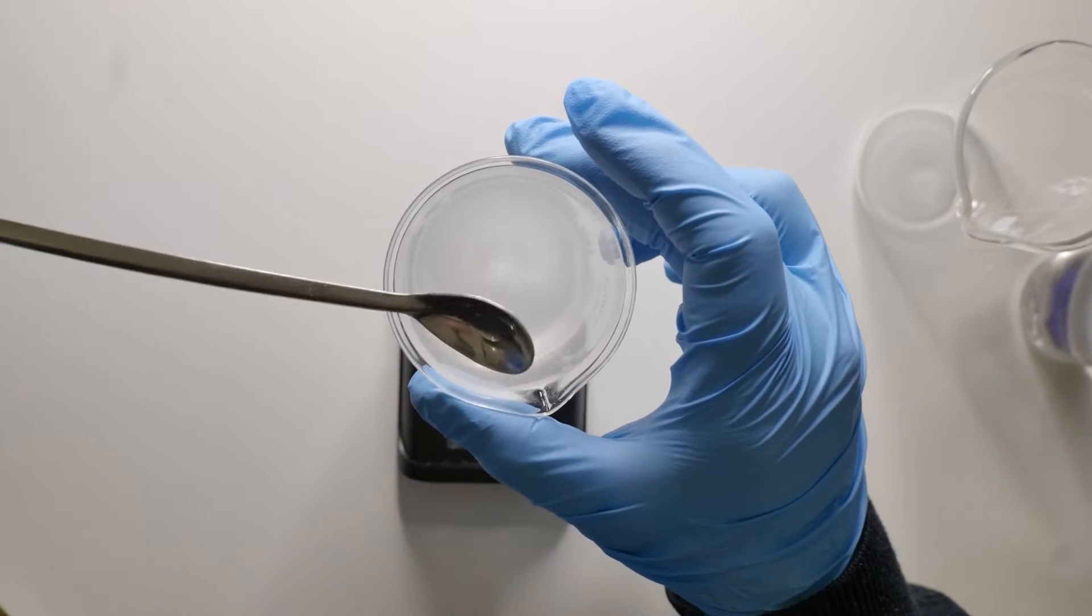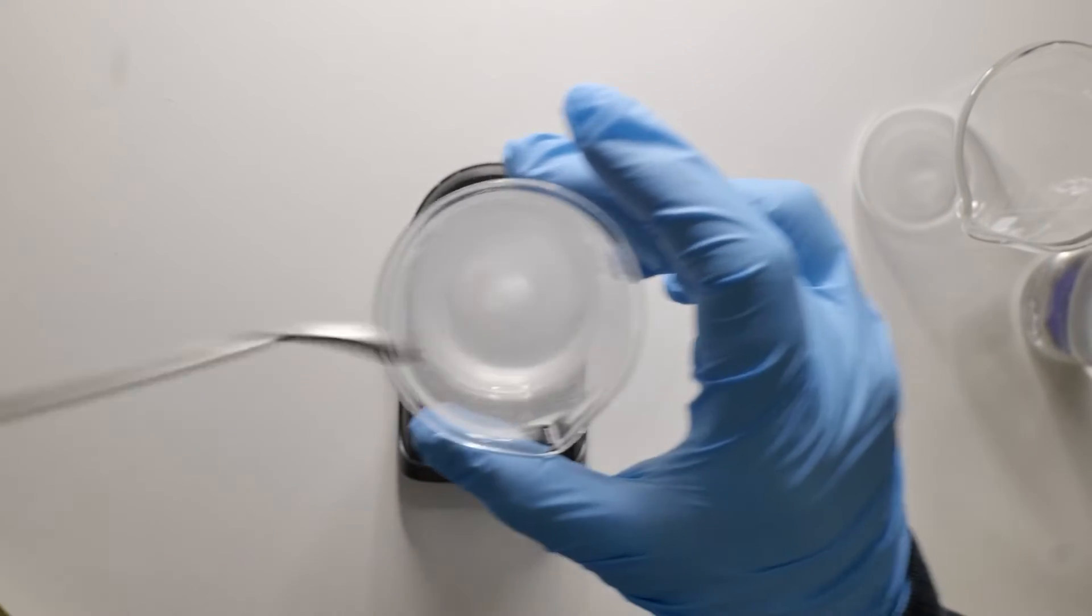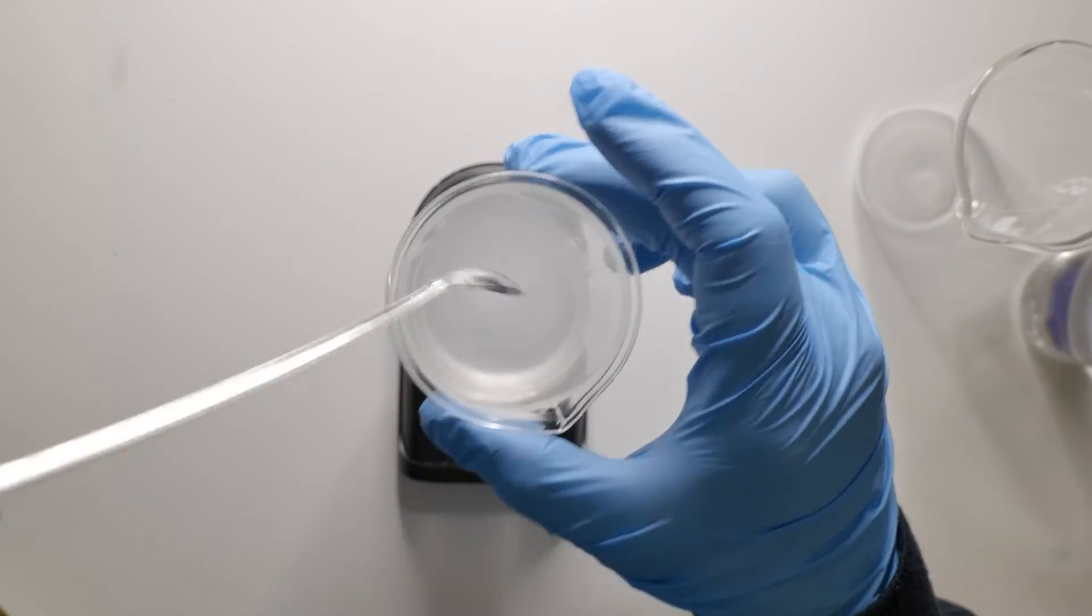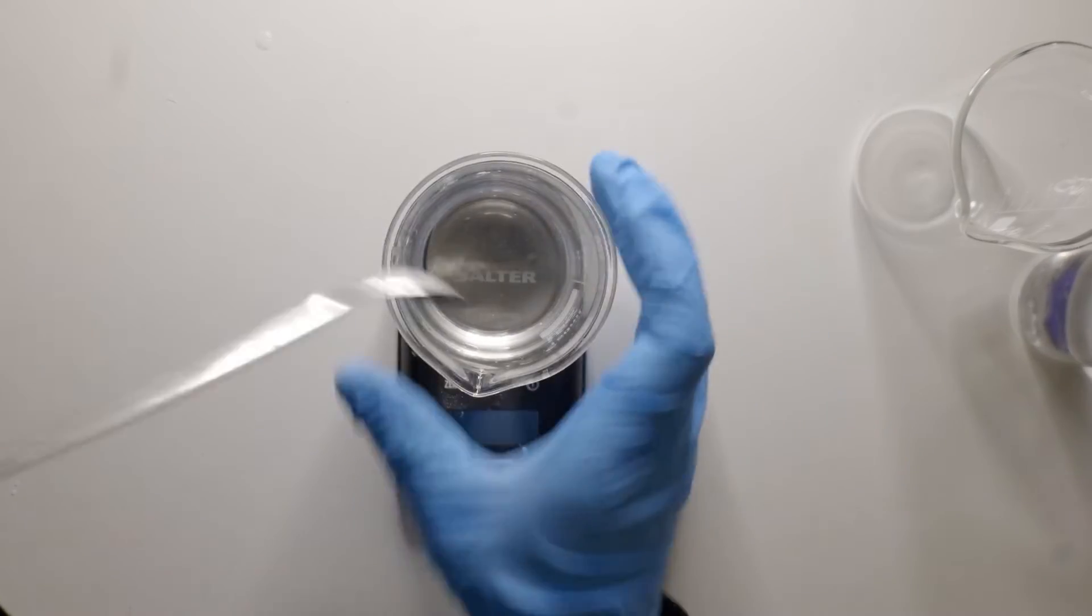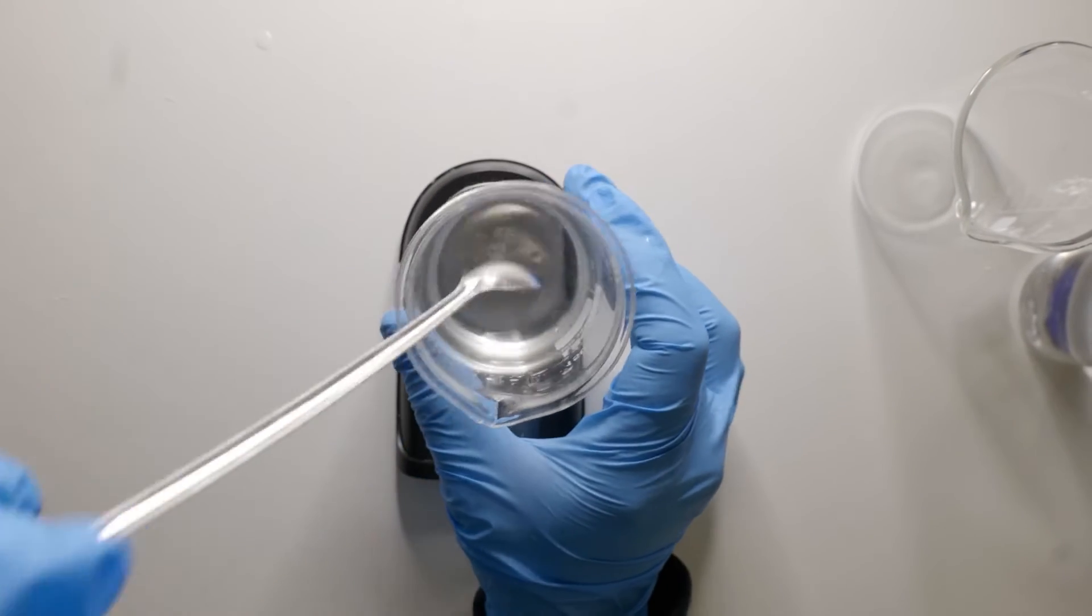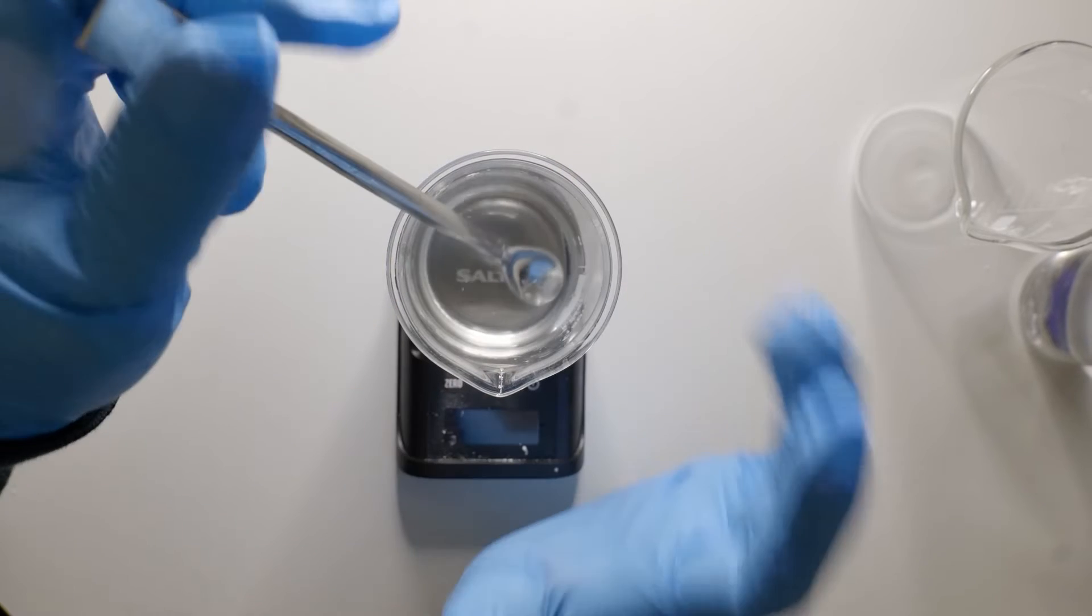Basically allantoin can be dissolved in warm water. I'm going to heat this and come back when it's fully dissolved. In cold water it takes a lot of time to dissolve, so with gentle heating you can dissolve allantoin. Let me heat this and come back.